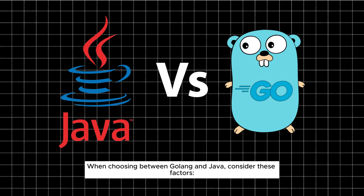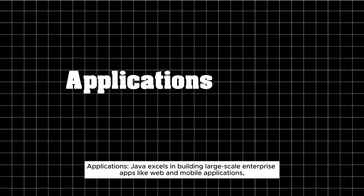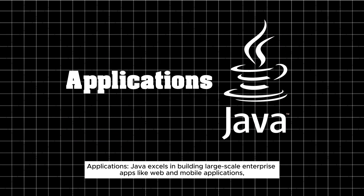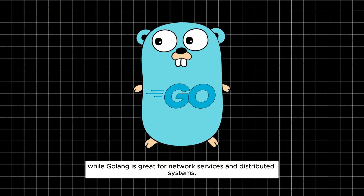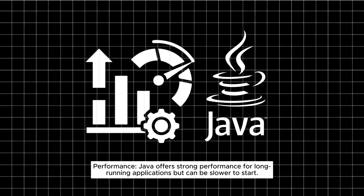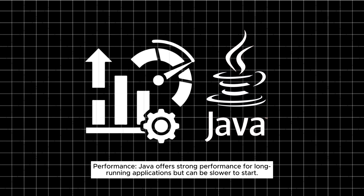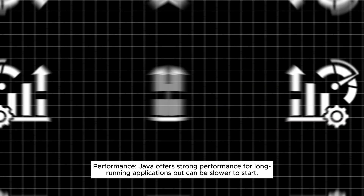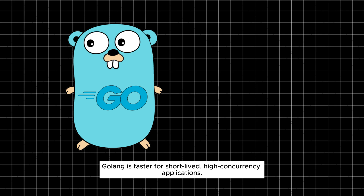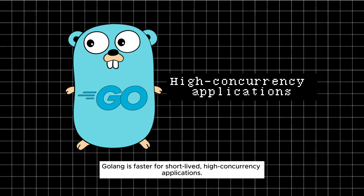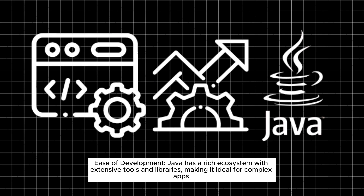When choosing between Go and Java, consider these factors. Applications: Java excels in building large-scale enterprise apps like web and mobile applications, while Go is great for network services and distributed systems. Performance: Java offers strong performance for long-running applications but can be slower to start, while Go is faster for short-lived, high-concurrency applications.